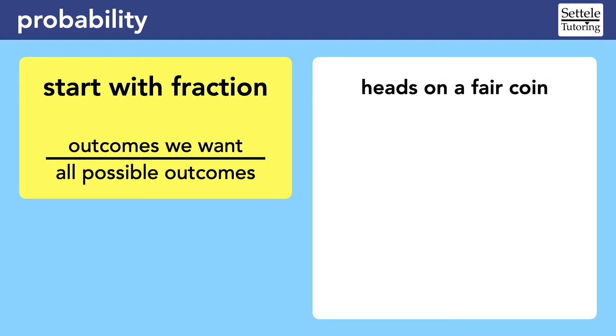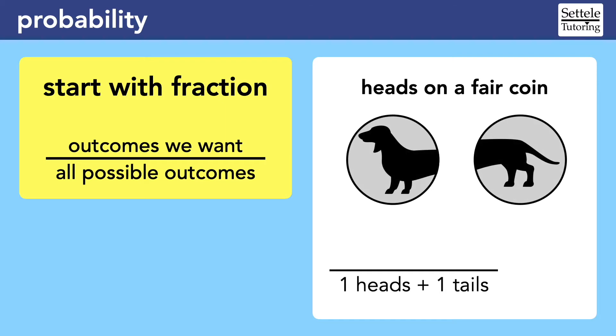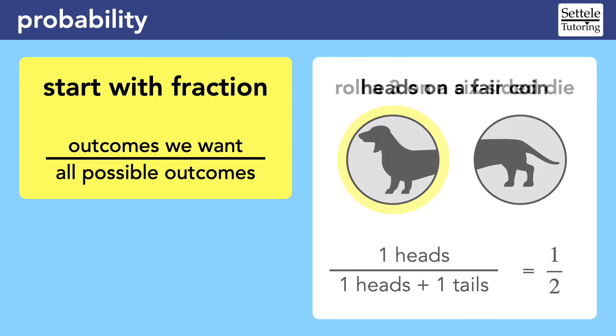Let's look at a simple example of flipping heads on a fair coin. I recommend starting every probability question with the denominator, since it's usually easier to understand. We know that there are two sides to a coin, one heads and one tails, so there are two possible outcomes. We want the one heads, so that's the numerator. Simplifying, we get the probability of flipping heads is one half, or one over two.